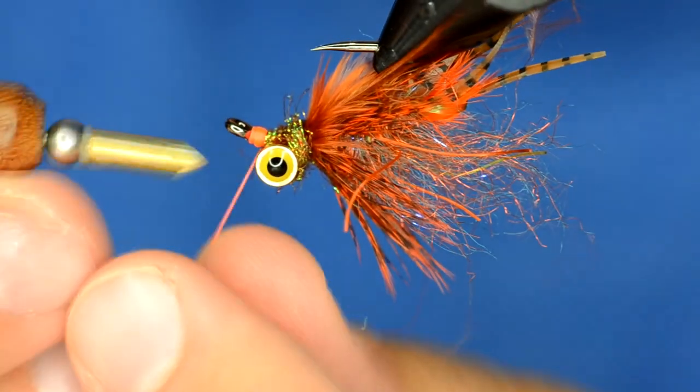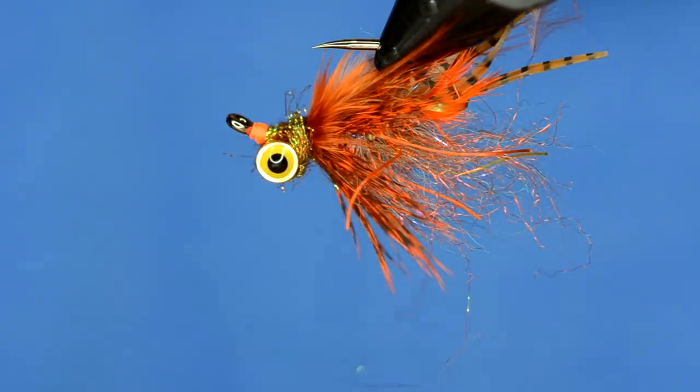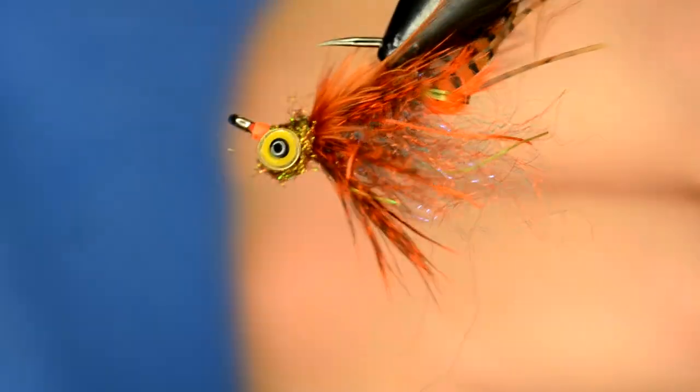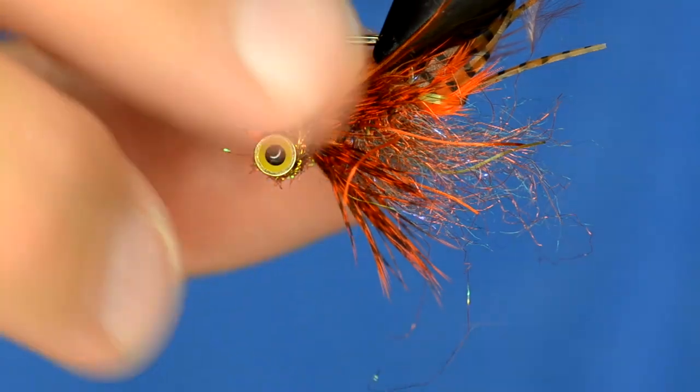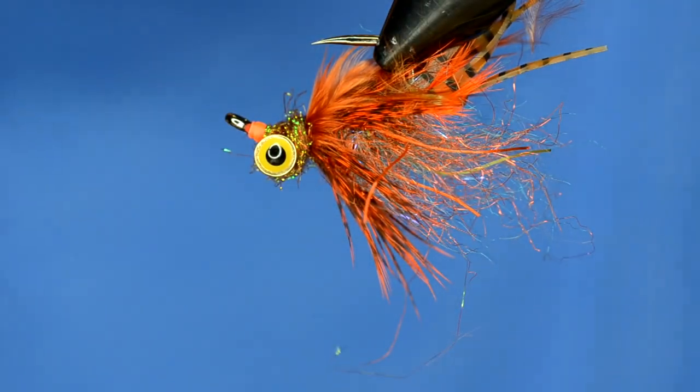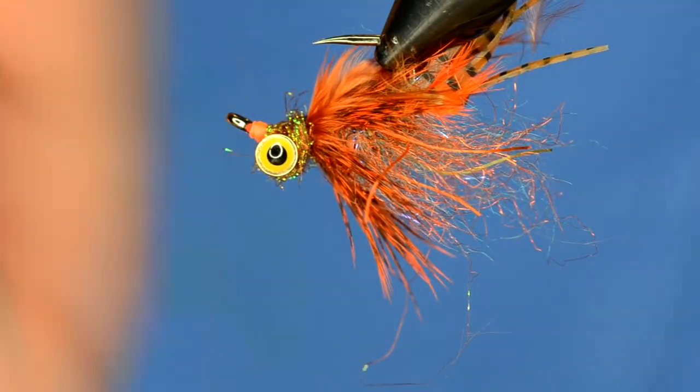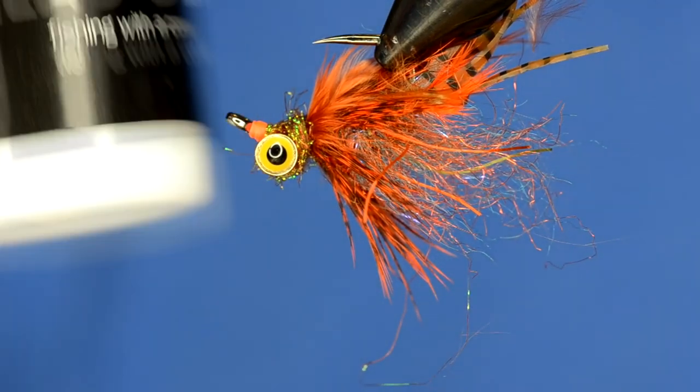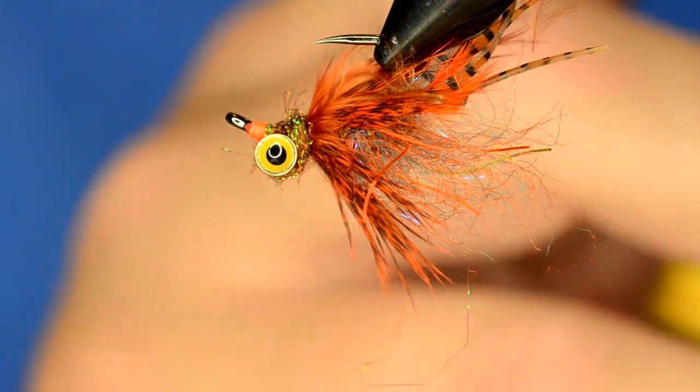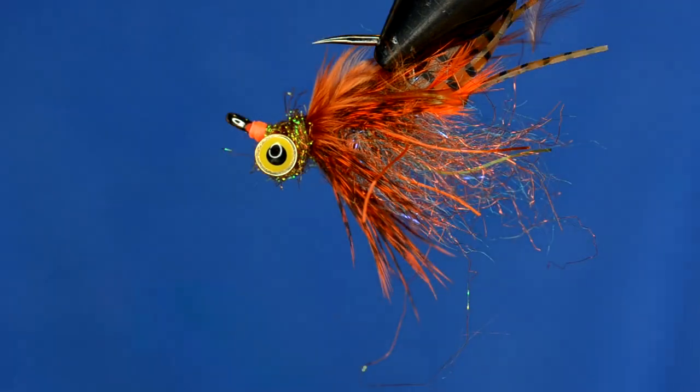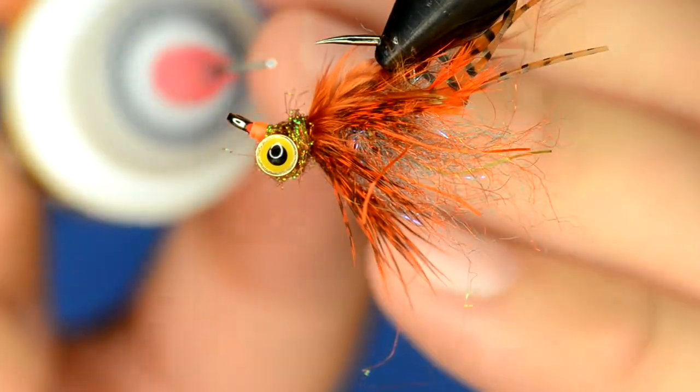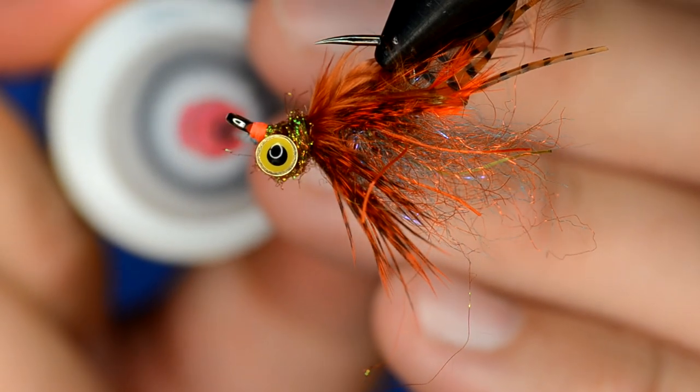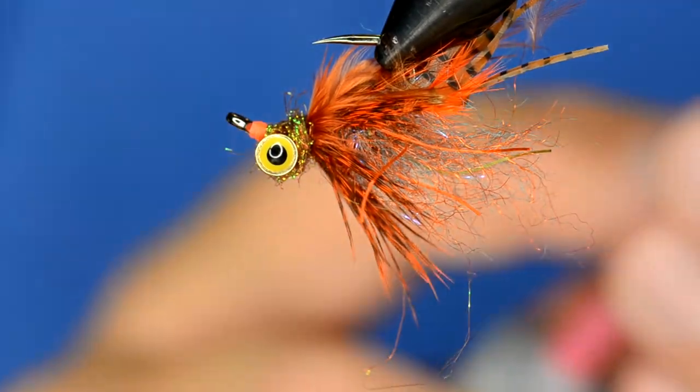Now I'll whip finish and another trick about carp flies is if you can avoid using super glue or head cements on these at all, you should because carp can smell really well. And so one of the things like you already saw me use this water-based head cement, very low odor. And so it's going to be less impactful on your fishing. So we'll just tag a little bit of it there and it'll seep right in.